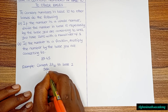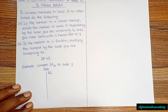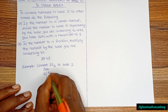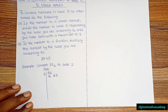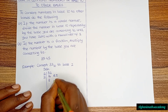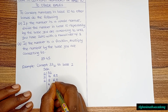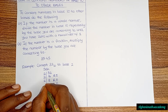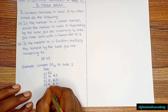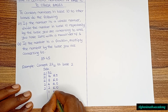We are dividing 32 by 2 and taking note of the remainder each time. 32 divided by 2 gives us 16 remainder 0. 16 divided by 2 gives us 8 remainder 0. 8 divided by 2 gives us 4 remainder 0. 4 divided by 2 gives us 2 remainder 0. 2 divided by 2 gives us 1 remainder 0.